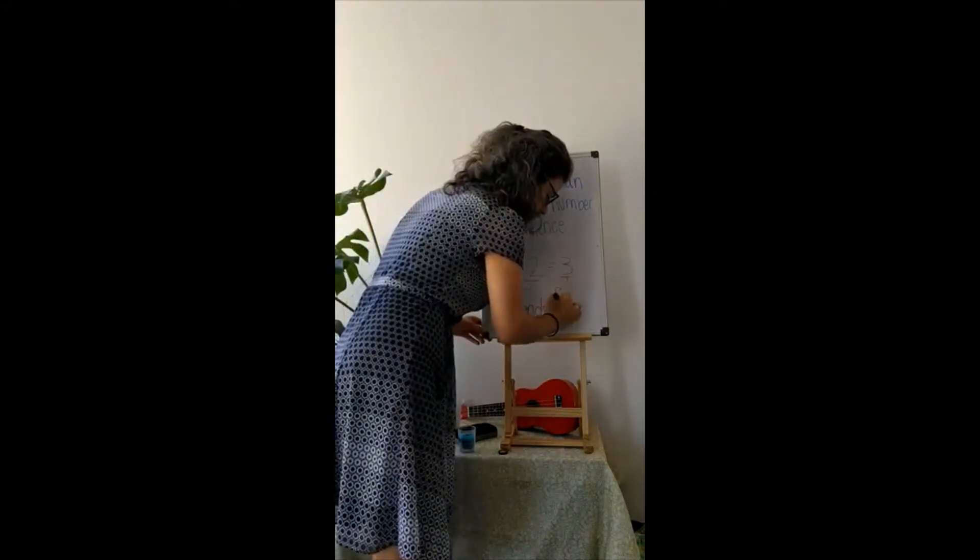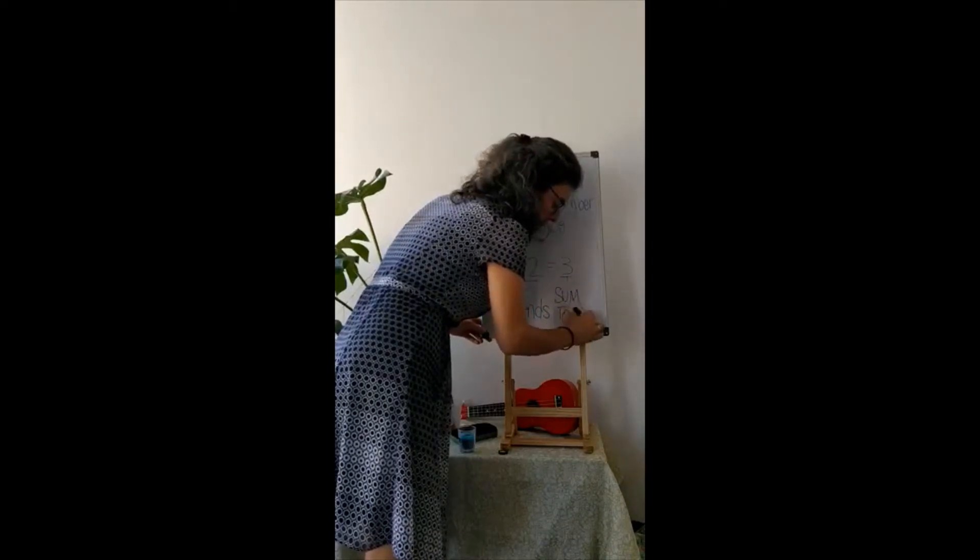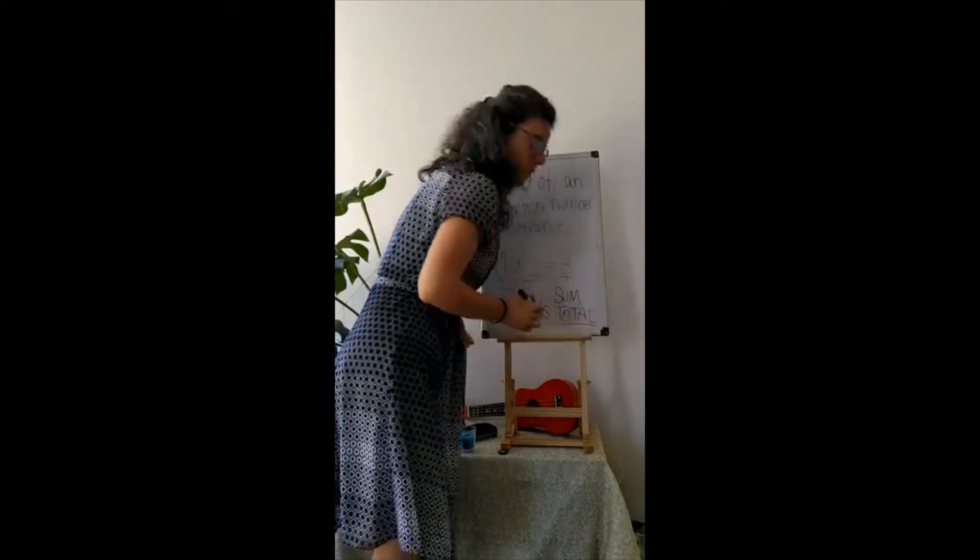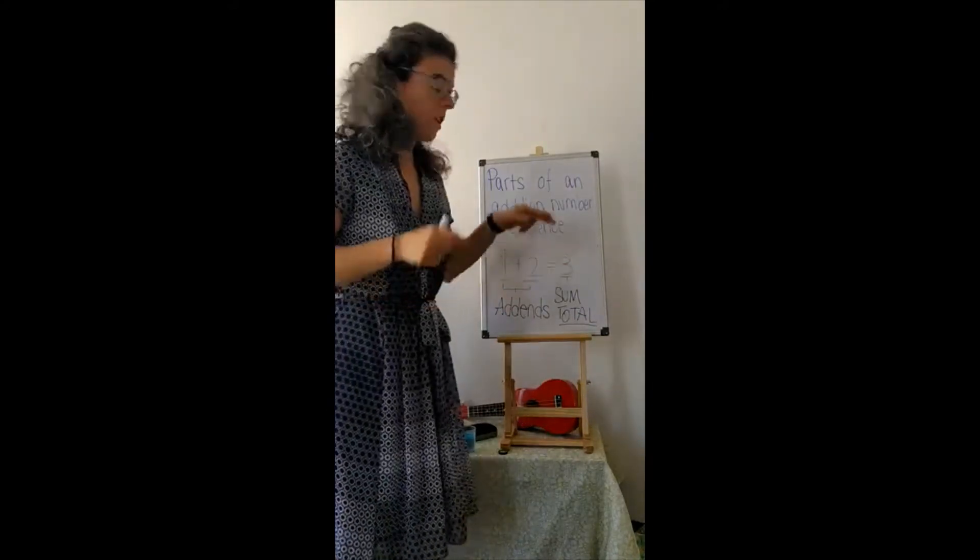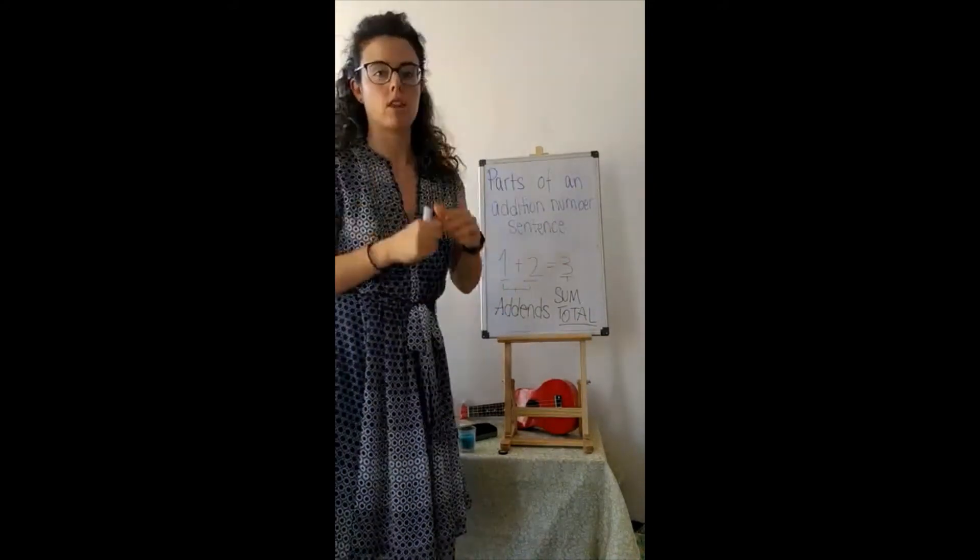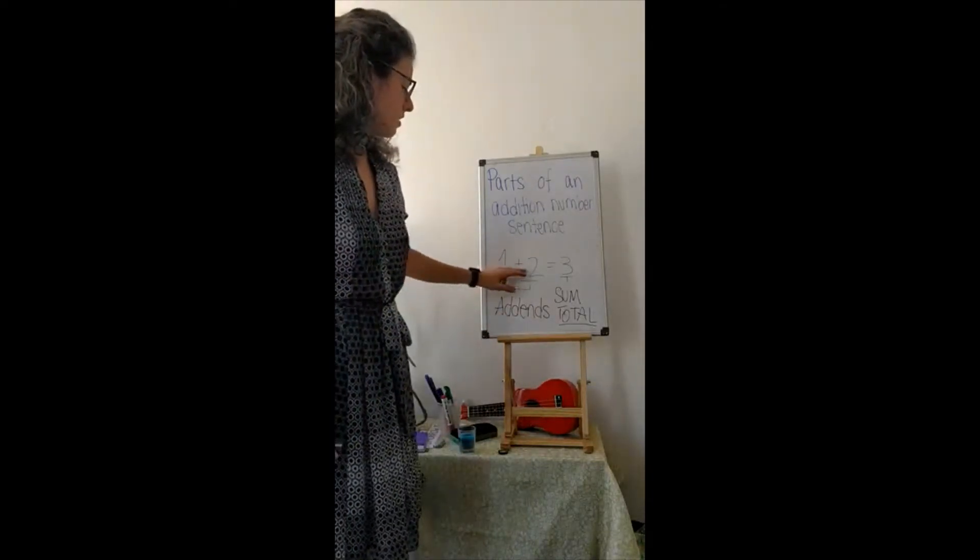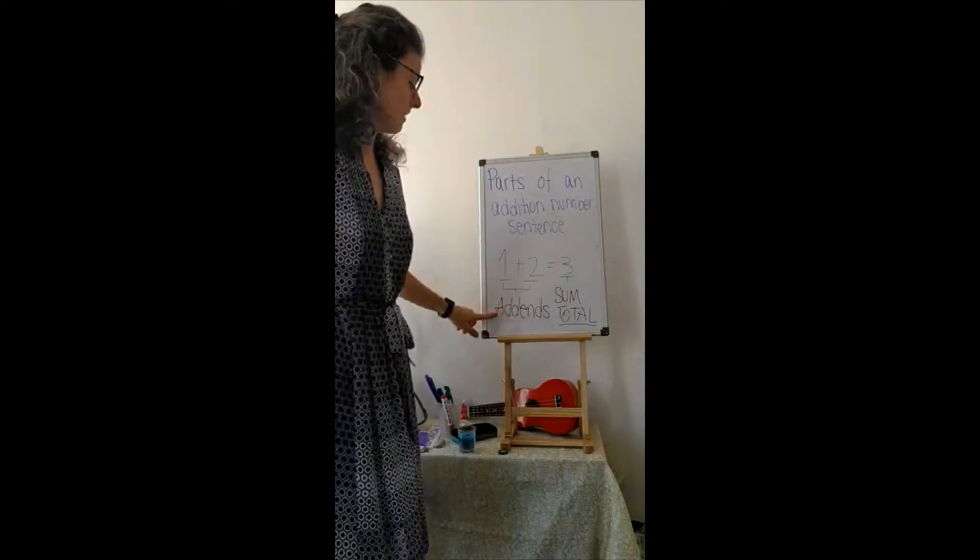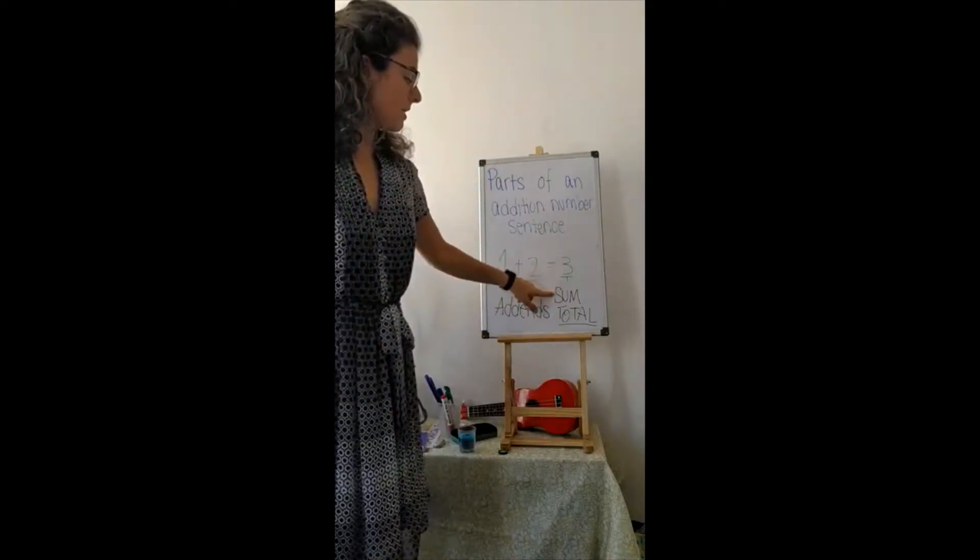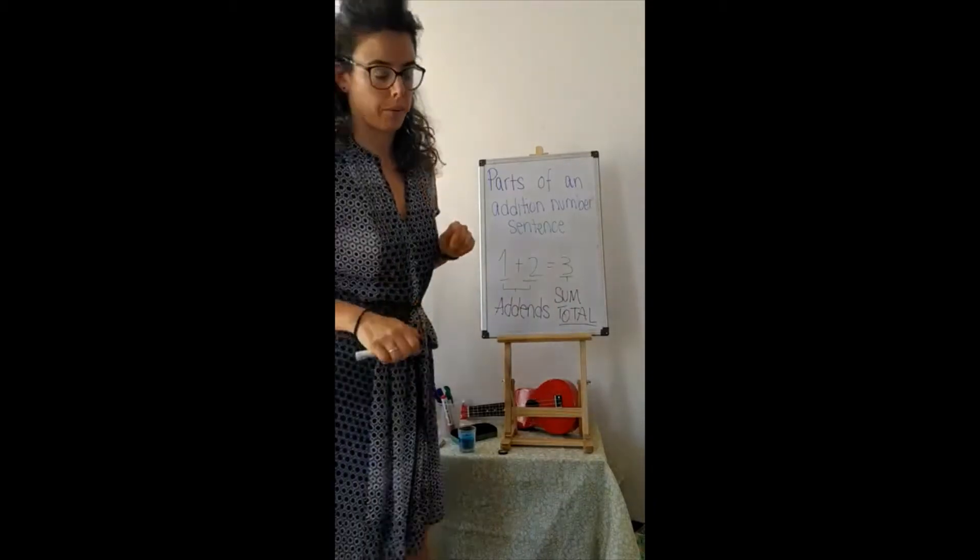The addends. And this number is the sum or the total. Remember that word total from our word problems? That means when we're talking about the final number in the group. So the addends are these two numbers. Whatever numbers you are adding together are addends. And this number is the sum or the total. There's two names for that one.